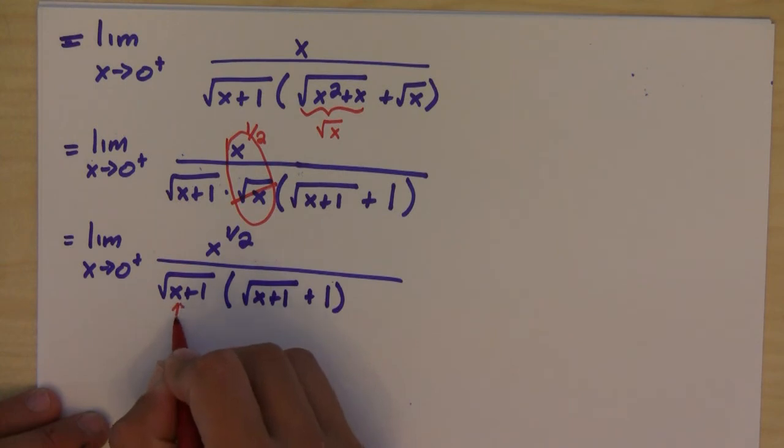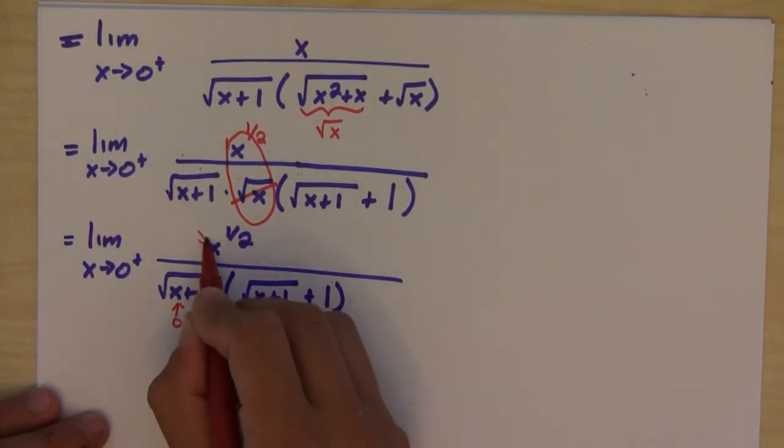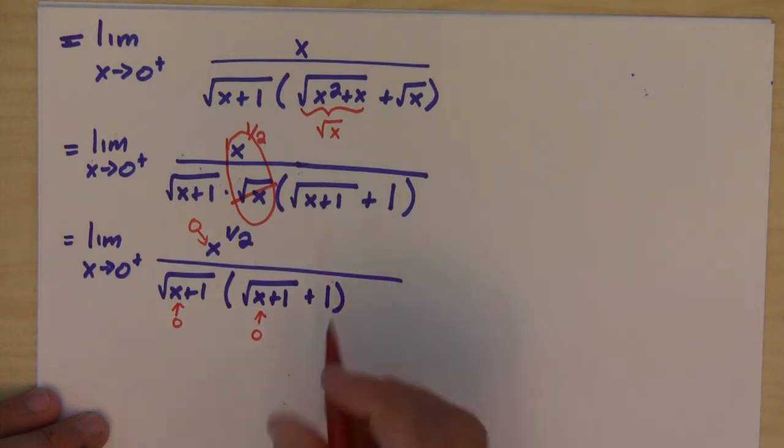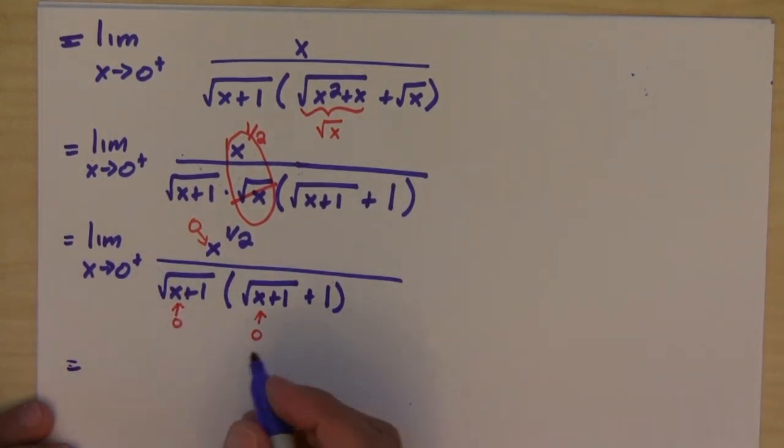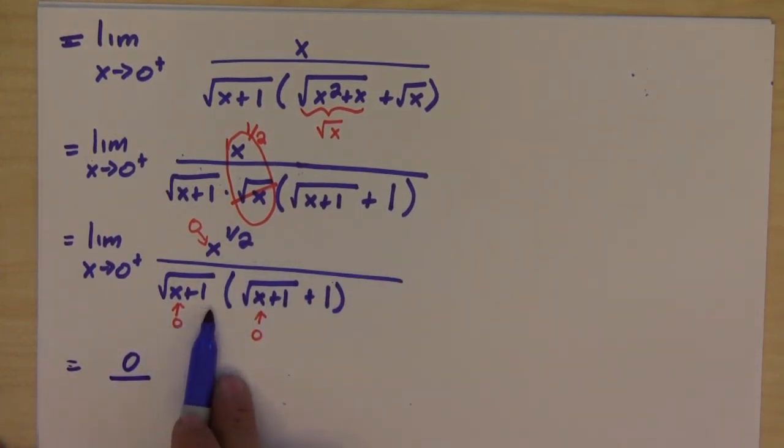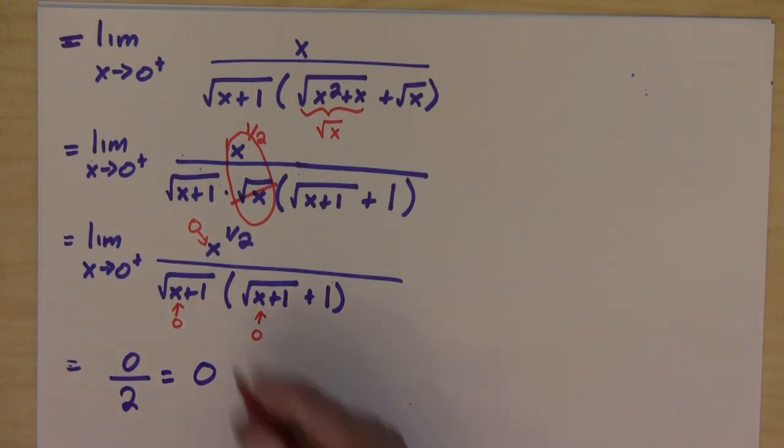And now, if I plug in 0, notice that I get 0 on the numerator. But this time in the denominator, I'm going to get 0 plus 1 is 1, and then on the inside I get 2. So 0 divided by 2, that's equal to 0. And that's my answer.